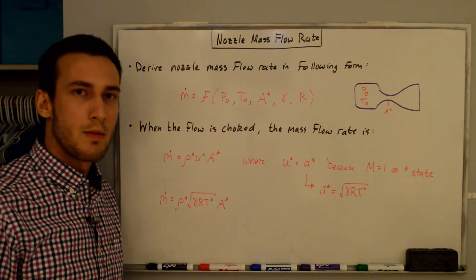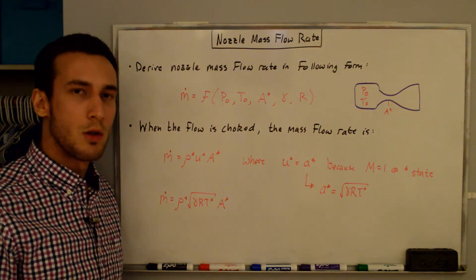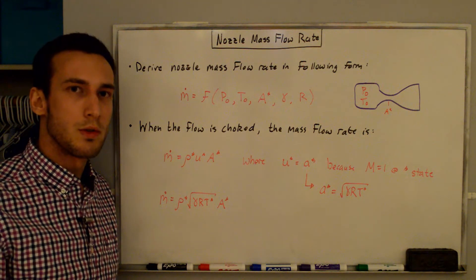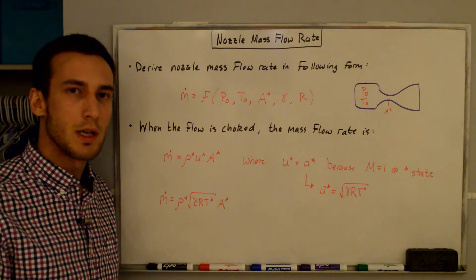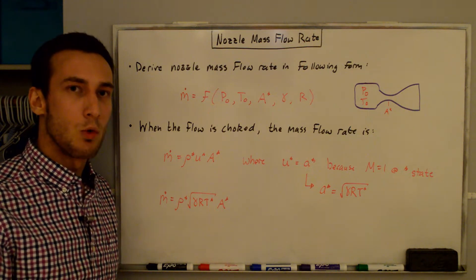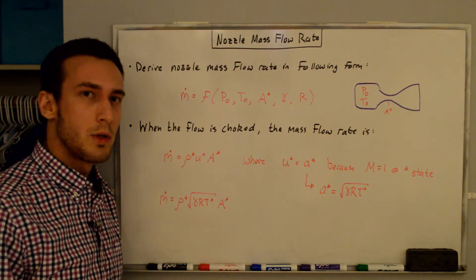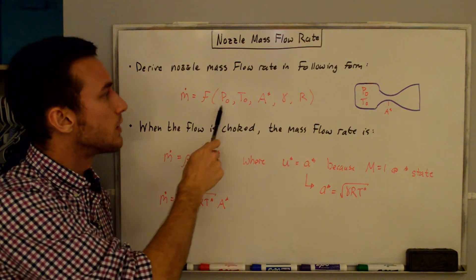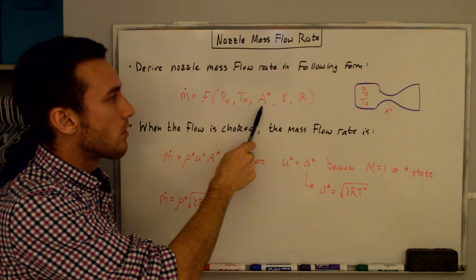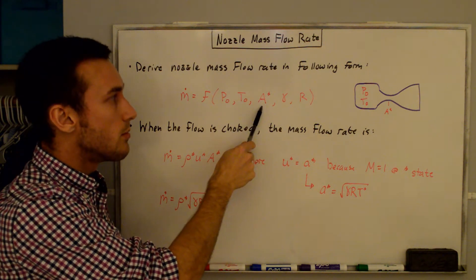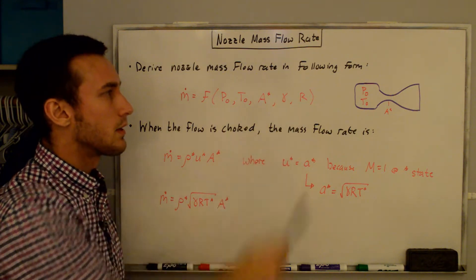In this video we are going to be deriving the equation for the mass flow rate through a nozzle. This will work for both converging nozzles and converging-diverging nozzles, but it will only work if the flow is choked. The mass flow rate equation that we derive will be a function of the stagnation pressure, stagnation temperature, area at the throat or the minimum area, ratio of specific heats, and a specific gas constant.